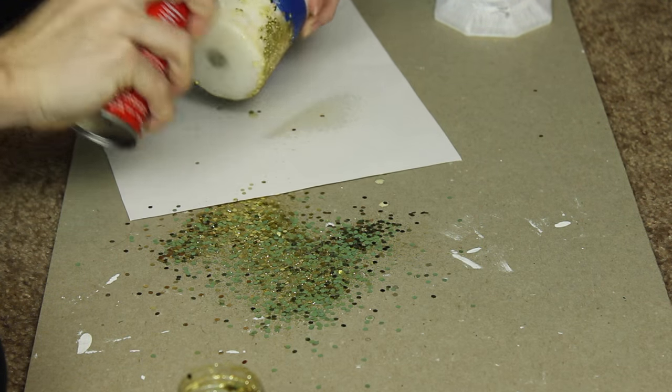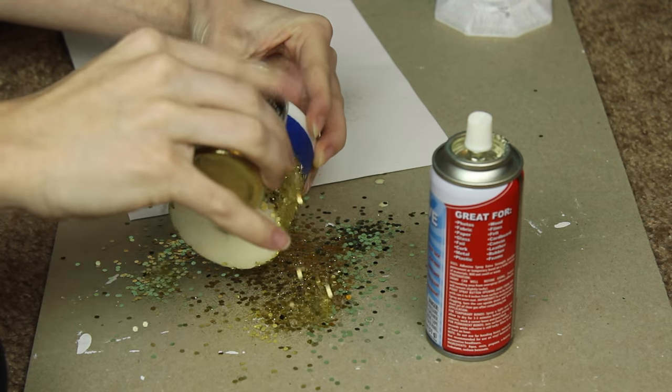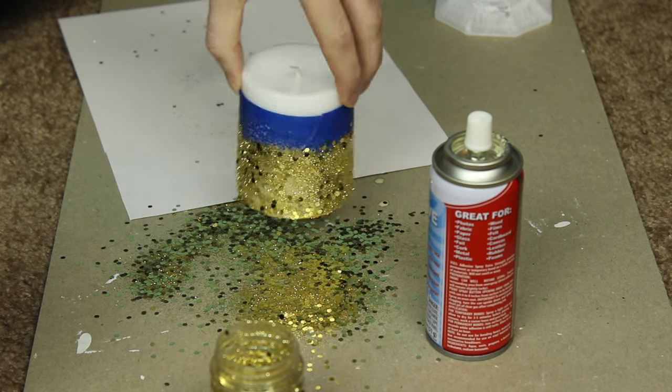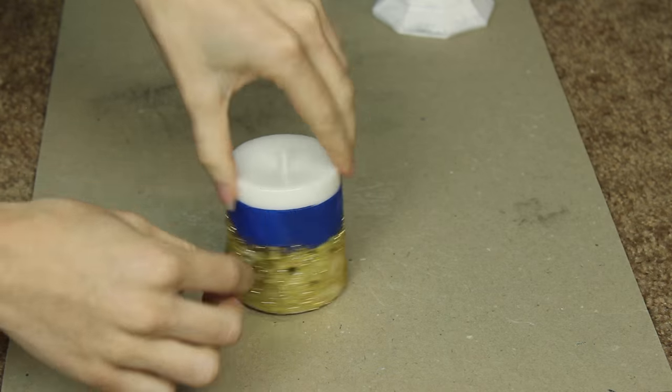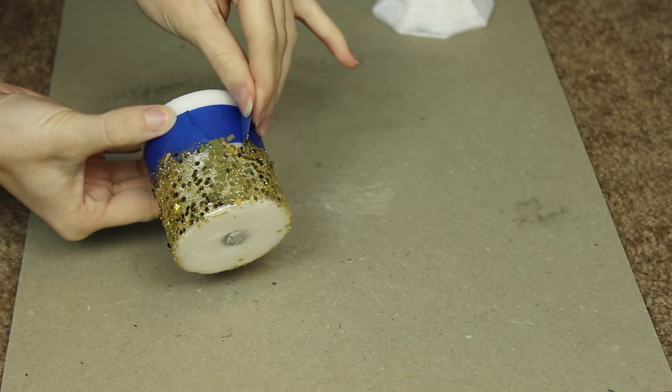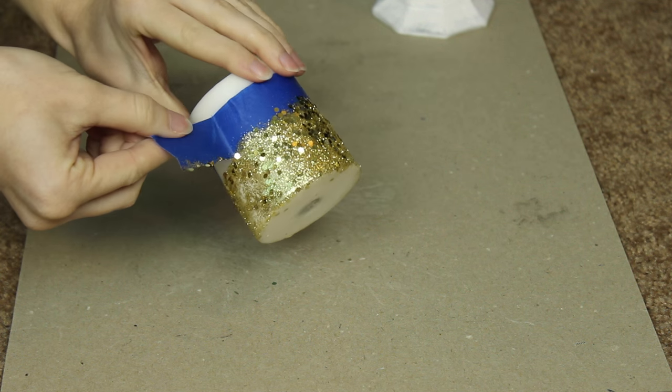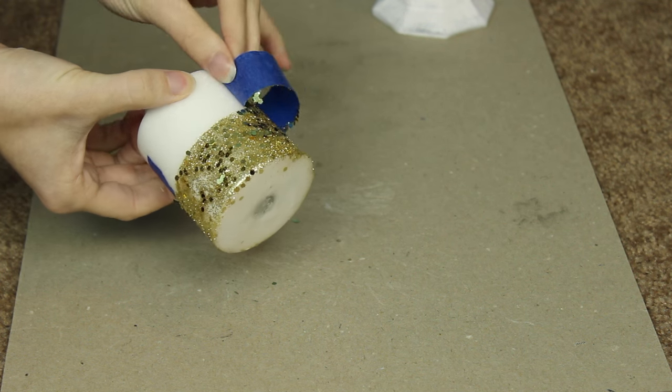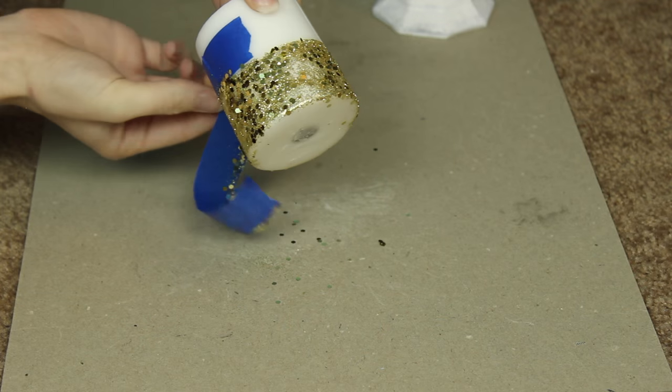I think Mod Podge might have worked a little bit better on these candles since the spray adhesive was kind of rolling off of them, but it still worked out pretty good. Now I'm just peeling the tape off after they've dried for a few minutes. And as you'll see, there's a perfect line from the glitter in the spray adhesive.